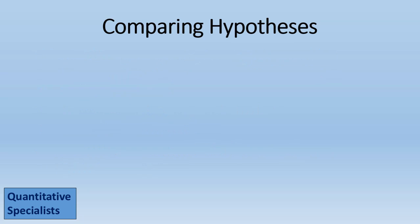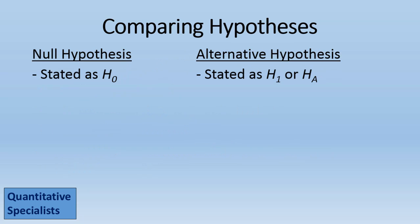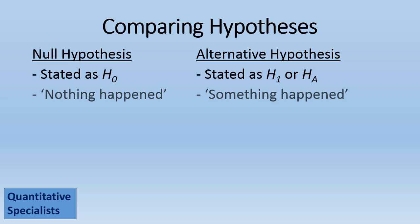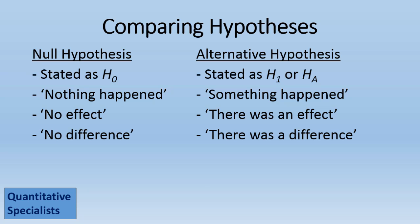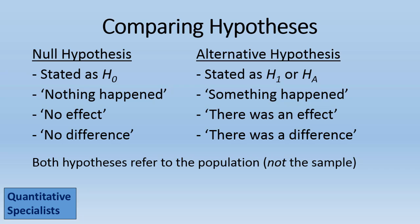Taking a look at these two side-by-side in review: the null is stated by H sub zero, the alternative is H sub one or H sub a. The null basically states nothing happened; the alternative states something happened. Or the null states no effect; the alternative states there was an effect. And finally, the null can state no difference, while the alternative states there was a difference. Both hypotheses refer to the population.